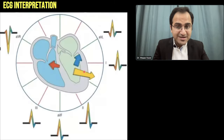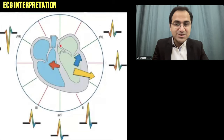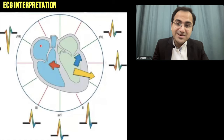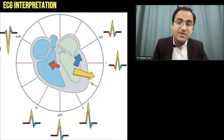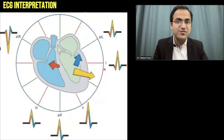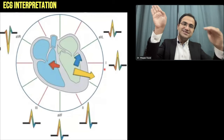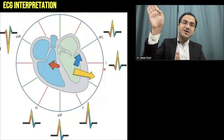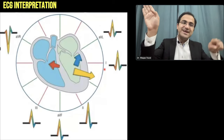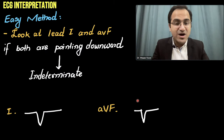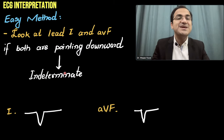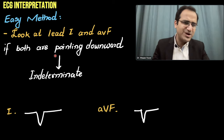If the vector deviates totally into the opposite indeterminate quadrant, the current flows opposite to both Lead I and Lead aVF. Both leads will show negative deflection. If both Lead I and Lead aVF are pointed downwards on the ECG, that is an indeterminate axis. It is rare to find both leads pointing downwards.